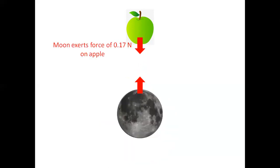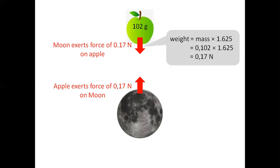The moon exerts a force of 0.17 newtons on the apple. At the same time, the apple exerts a force of 0.17 newtons on the moon. The mass of the apple is 102 grams. To calculate the weight, we take the mass in kilograms, so take the 102 grams divided by a thousand to get the mass in kilograms, and multiply it by 1.625. That gives us the weight of the apple as 0.17 newtons.